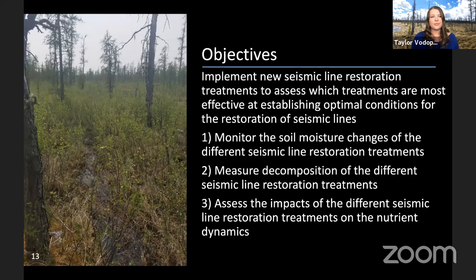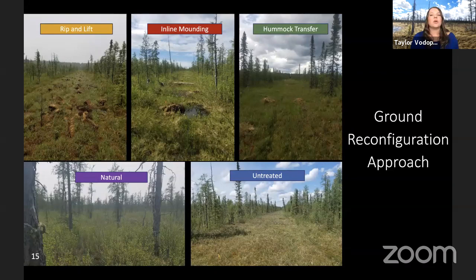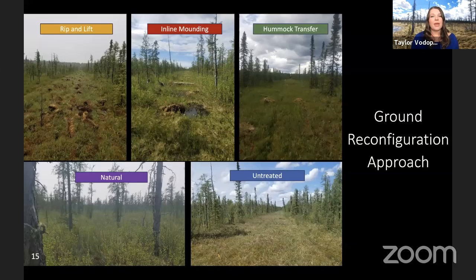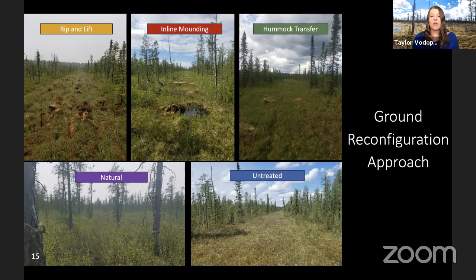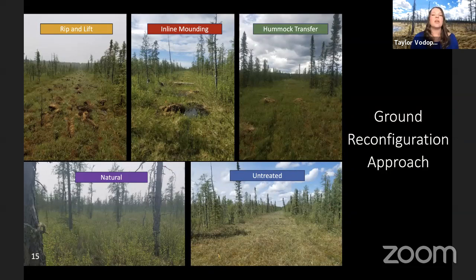My study site is located on a treed peatland in the Alberta boreal forest with two intersecting seismic lines. We restored these seismic lines using ripping and mounding techniques — three different peat reconfiguration approaches. The rip and lift rips the peat to form a hummock, with the ripped area acting as a hollow. In-line mounding takes excavated peat from the line and places it next to the excavated area. The hummock transfer takes a hummock from off the line in the natural area and places it on the line with vegetation side up so it can establish and spread. We compared these treatments against a natural reference site and an untreated area.